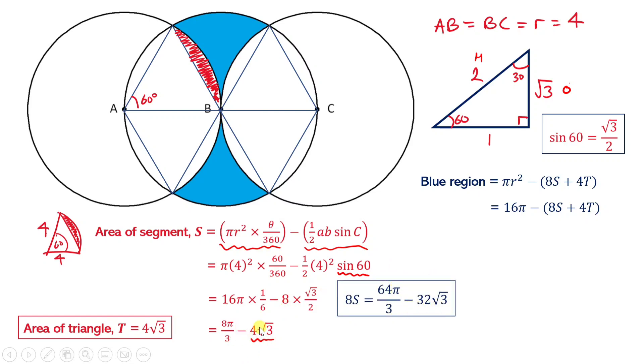Just times both of these by 8. And then 4 times T is just going to be 4 times 4√3, which is 16√3. Now let's add these together. If you add them together, -32√3 and +16√3 reduce to -16√3. And again, you've still got your 64π/3.